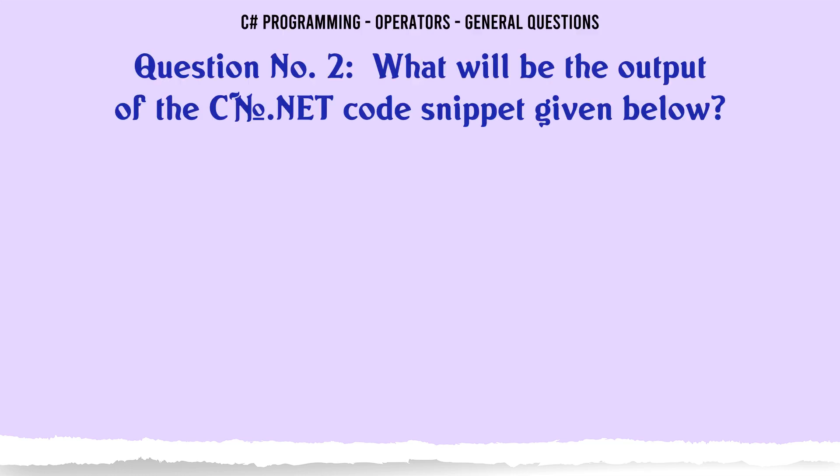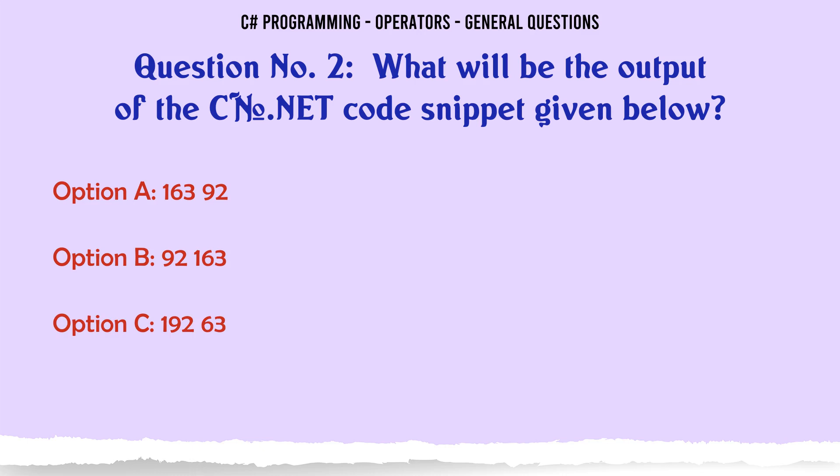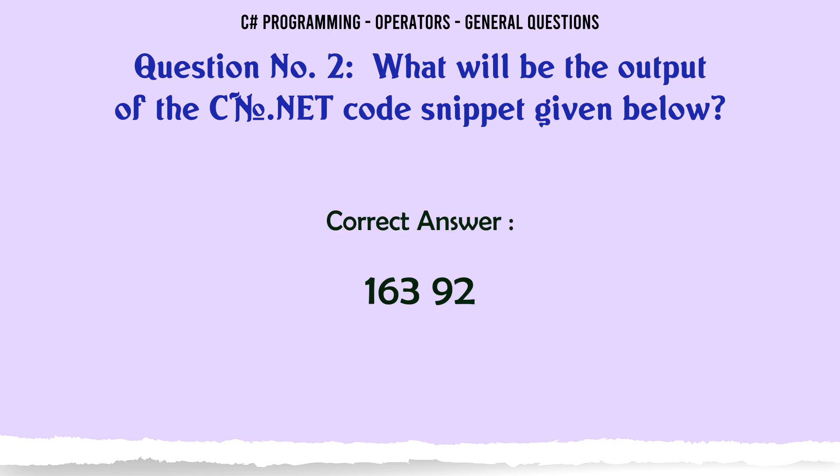What will be the output of the C.NET code snippet given below? A: 163, 92. B: 92, 163. C: 192, 63. D: 0, 1. The correct answer is 163, 92.